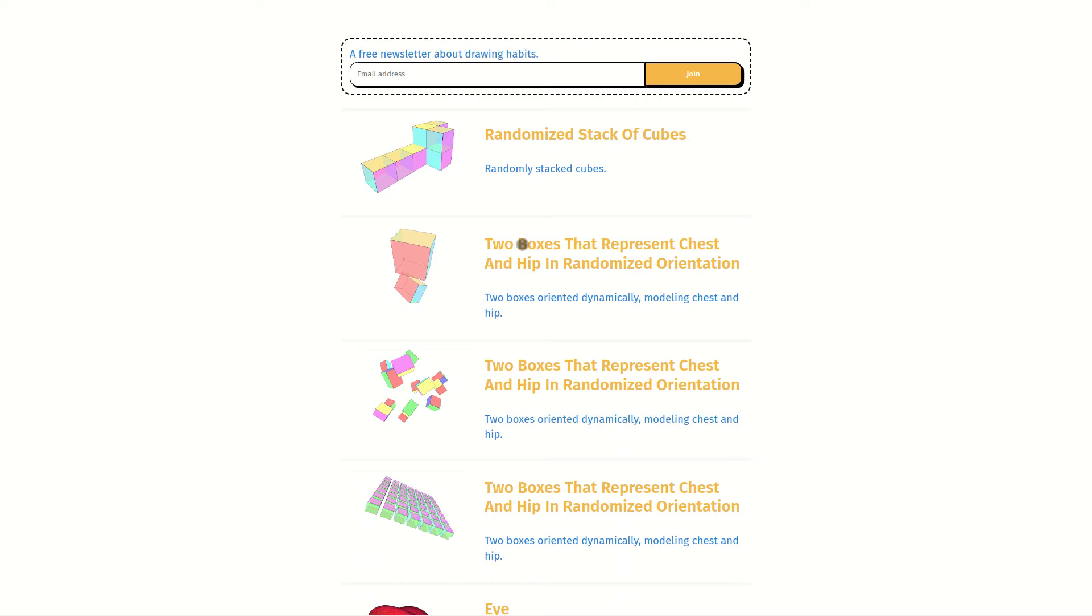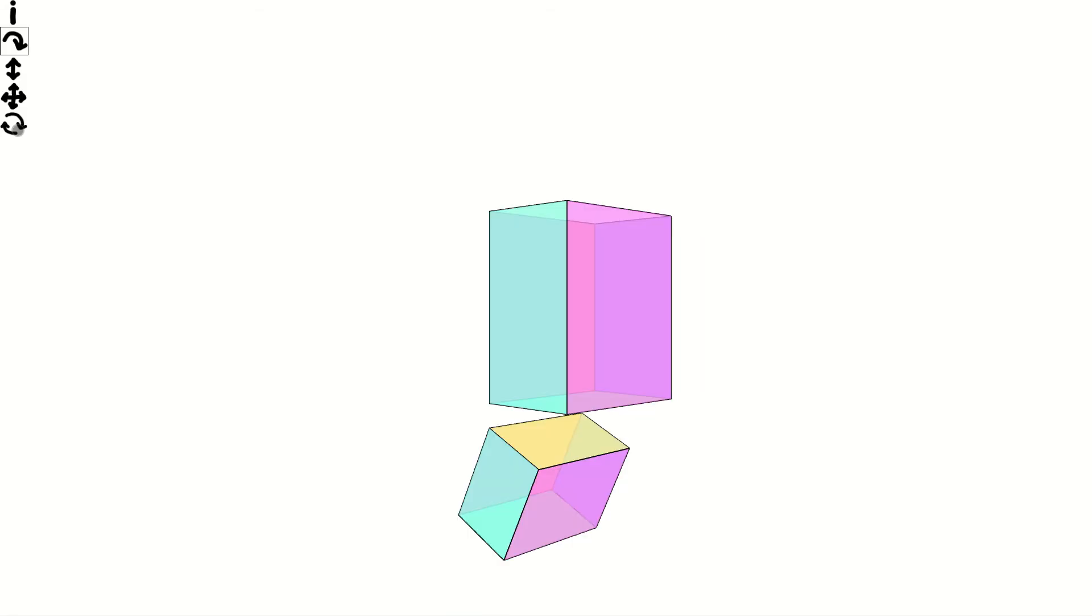A second model consists of two boxes that represent the chest and the hip of the human torso. Each time you request a new configuration of the boxes, they will be oriented differently relative to each other, presenting dynamic poses of the torso. The same tips mentioned before hold for this model also.